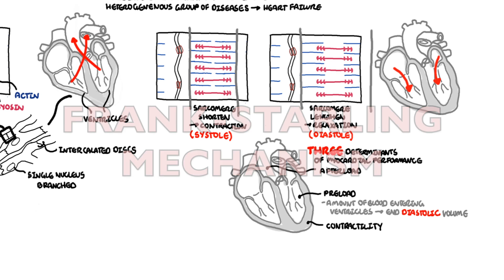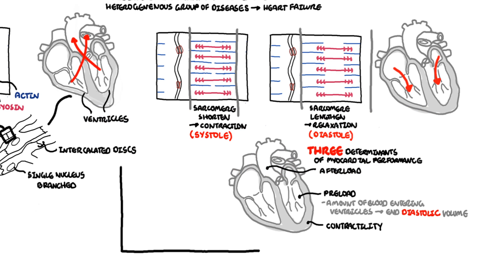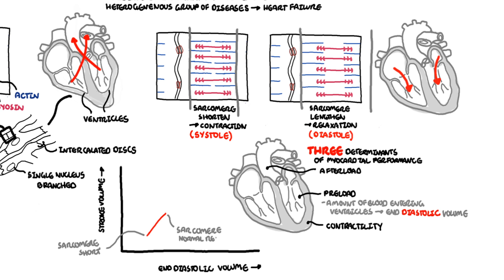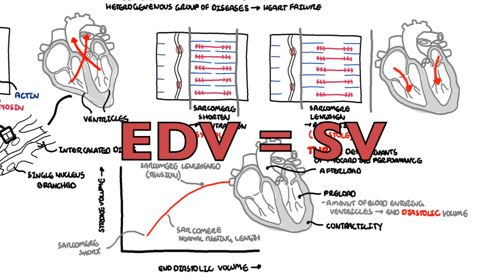This relationship is the Frank-Starling relationship, depicted with a graph showing diastolic volume on the x-axis versus stroke volume on the y-axis. As more blood enters the ventricles during diastole, this increases the length of the resting sarcomere, which builds up tension — kind of like a spring. During systole, when the sarcomere shortens, it releases that tension, increasing the contractile force and therefore the stroke volume. An increase in end-diastolic volume therefore increases stroke volume normally.